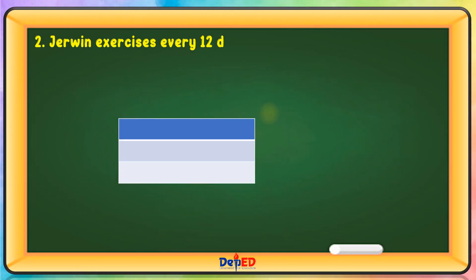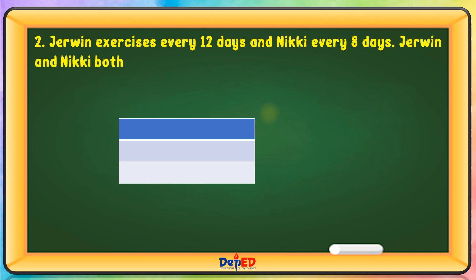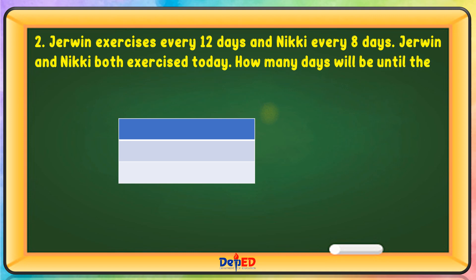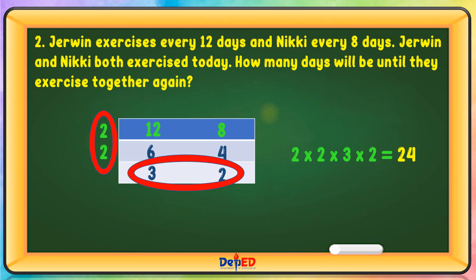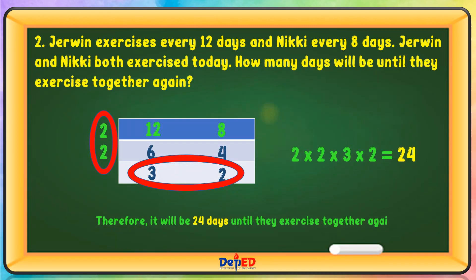Jerwin exercises every 12 days and Nikki every 8 days. Jerwin and Nikki both exercise today. How many days will it be until they exercise together again? 12 and 8 are divisible by 2: 12 divided by 2 is 6; 8 divided by 2 is 4. 6 and 4 are divisible by 2: 6 divided by 2 is 3; 4 divided by 2 is 2. 2 times 2 times 3 times 2 equals 24. Therefore, it will be 24 days until they exercise together again.